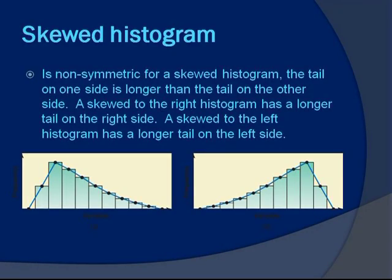A skewed histogram is non-symmetric. For a skewed histogram, the tail on one side is longer than the tail on the other.